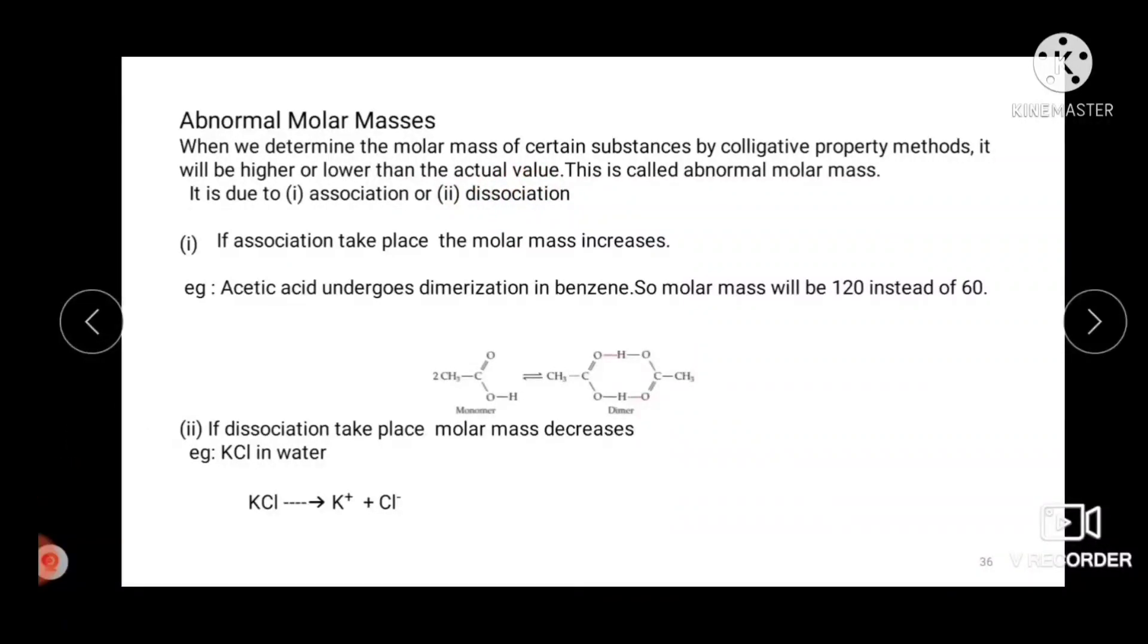Let us understand now how association and dissociation leads to abnormal molecular masses. Association means when some of the solute molecules in a solution undergo association to form bigger molecules, the effective number of particles decreases. As a result, the colligative property will show a proportional decrease.